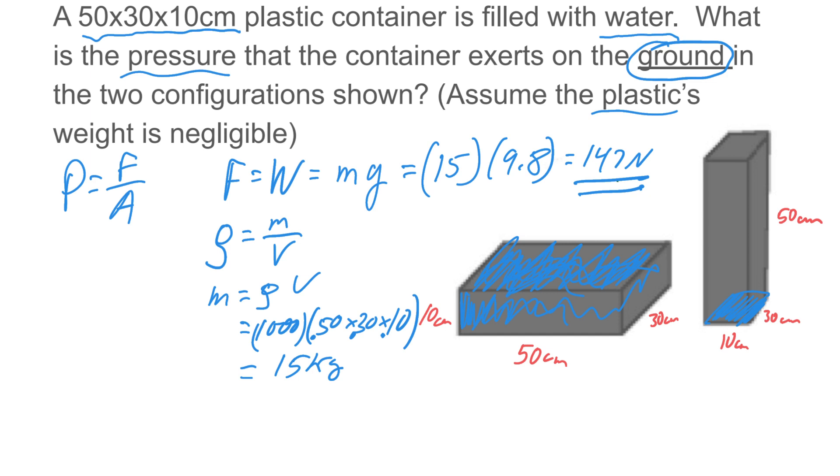So in configuration 1 we're going to get a force of 147. The area of that one is going to be 50 by 30. So 50 times 30, again that should be in centimeters, so convert that to meters: 0.50 times 0.30. So for configuration 1 we get 147 divided by 0.3 times 0.5. That is 980 pascals.